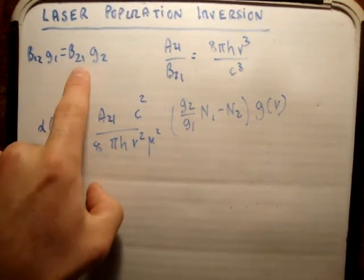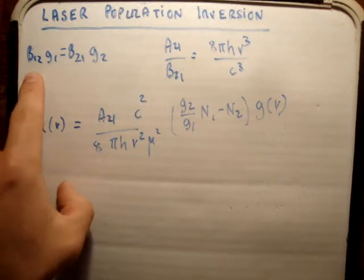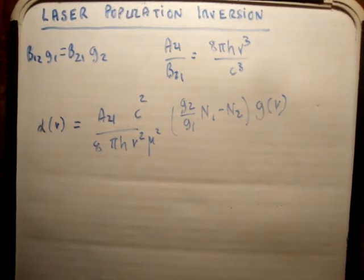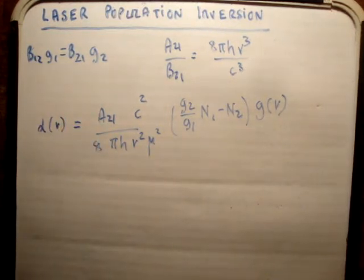So B21 here is the probability of stimulated transition from level 2 to level 1. B12 is the probability of stimulated transition from 1 to 2, or energy level 1 to energy level 2. And these G values here are the degeneracies of levels 2 and level 1.